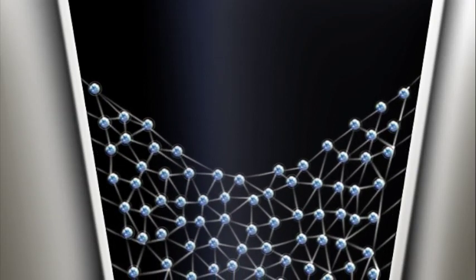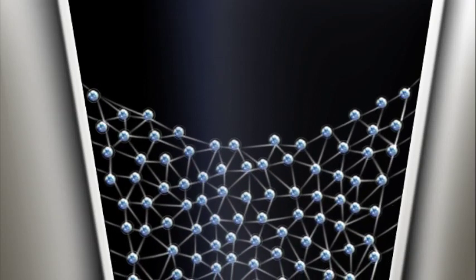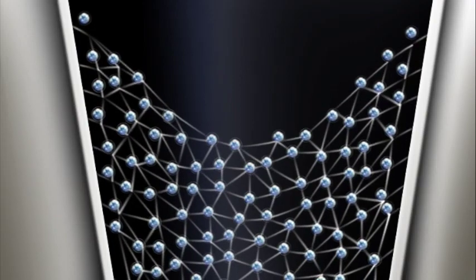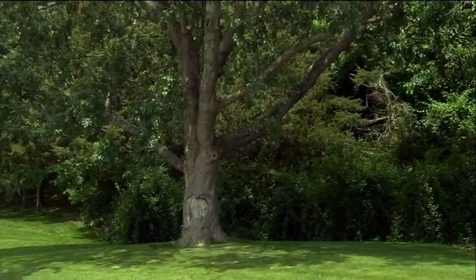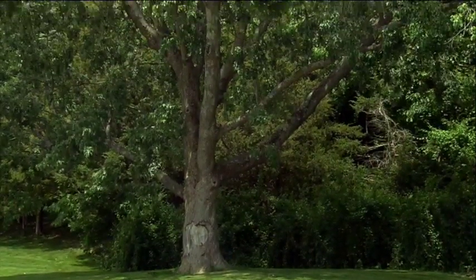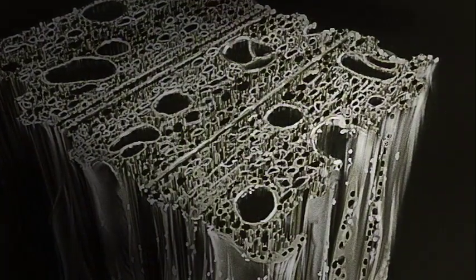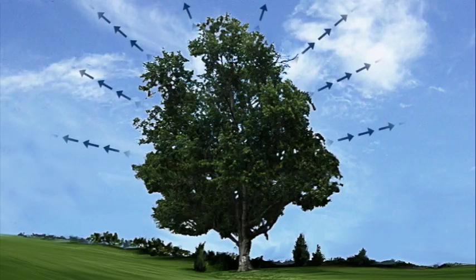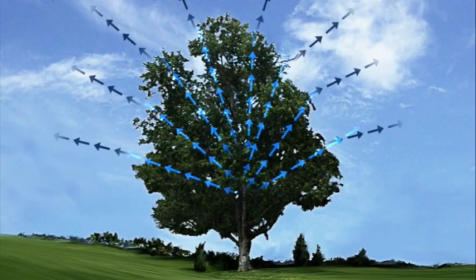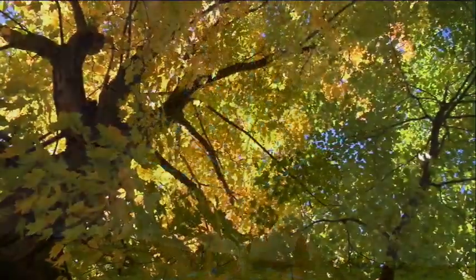These same forces, adhesion and cohesion, are at work in trees. Water rises inside the trunk of a tree via tiny capillaries or tubes. Meanwhile, as water evaporates from the leaves, it creates an upward pull that is transmitted through the chain of water molecules below.